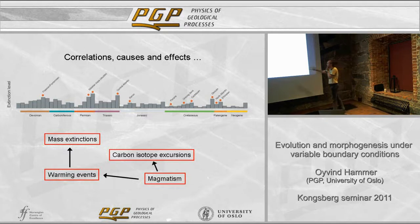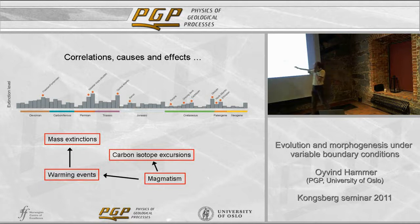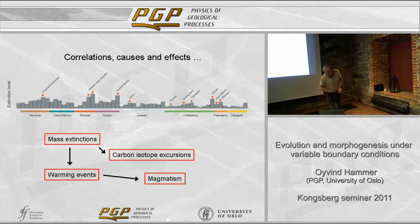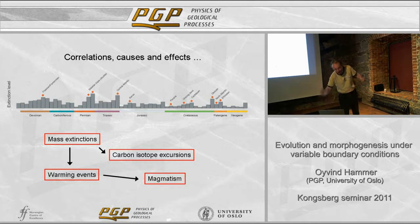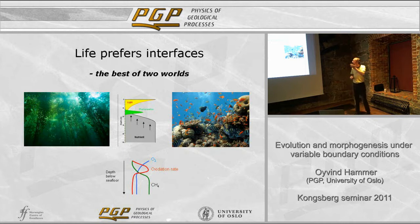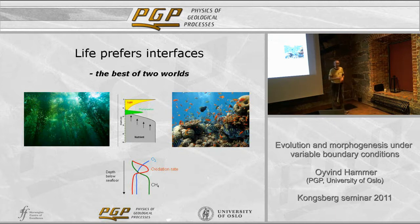When you look at the theory for mass extinctions, magmatism causes warming events, and this causes mass extinctions. What if it were the other way - we get the mass extinction, and that somehow stops plate tectonics? That was a joke. But my point is just that life is influencing geology, and you have causation in both directions.